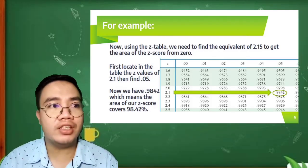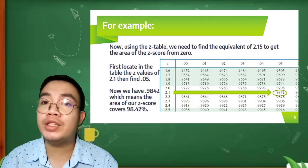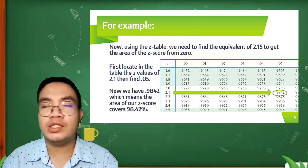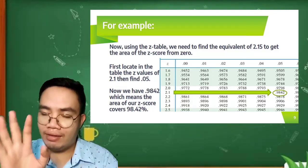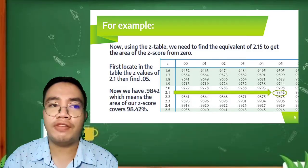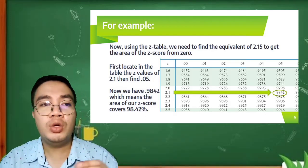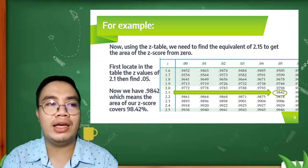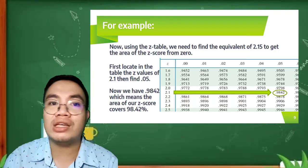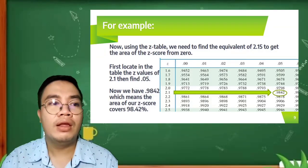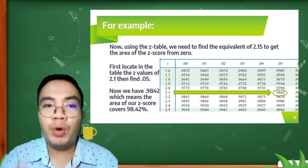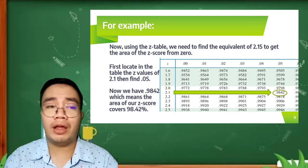Moving on, using the Z-table, we need to find the equivalent of 2.15 to get the area of the Z-score from 0. First, we locate in the table the Z-values of 2.1, the first two digits of the values that we have. Those values can be found at the leftmost column in your Z-table. Then we move to the hundredths value. In this case, the 2.1, the next value is 5, so we need to find the 0.05. Going to the right of our Z-table, it falls in 0.9842. That is the value of 2.15.